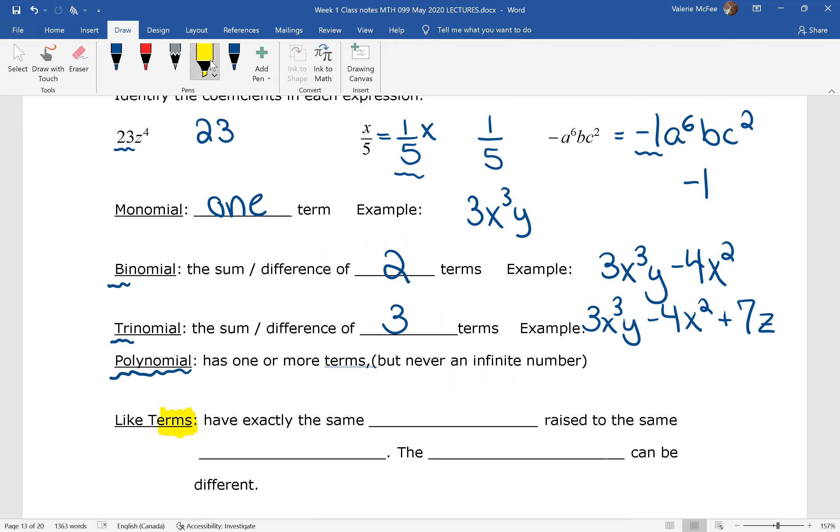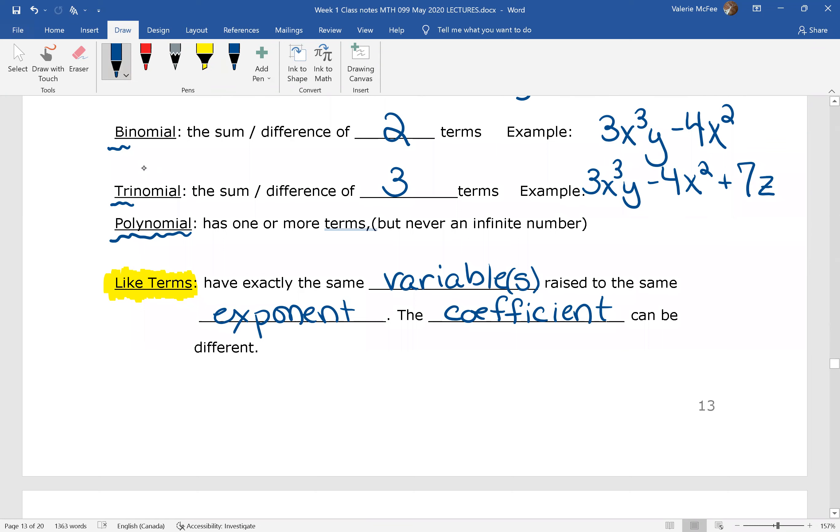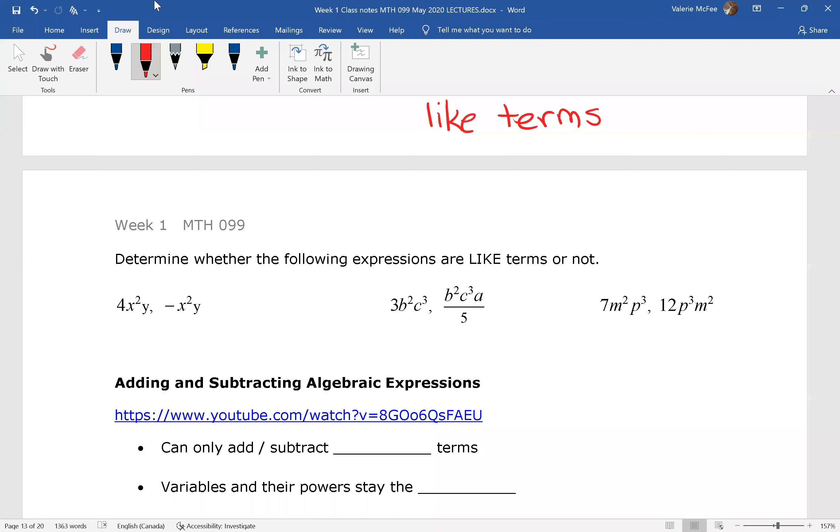What you're going to hear us talking about most often in this course are like terms. This is an important definition. Like terms have exactly the same variables raised to the same exponent. The coefficient, the number in front can be different. So for example, 3x squared y, negative 5x squared y. These both have x squared y. The coefficients in front are different. That's okay. These are like terms.